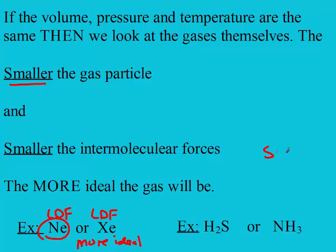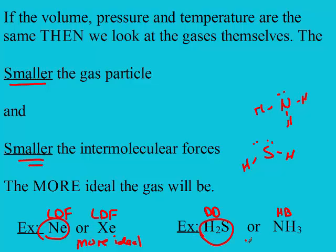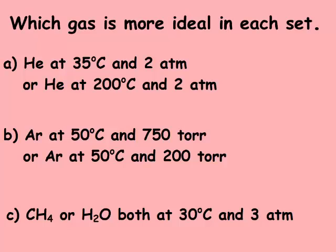H2S is polar, so it's dipole-dipole, and ammonia has hydrogen bonding. We want the smaller IMF, so H2S is more ideal. Pause the video and figure out which is most ideal in each set.